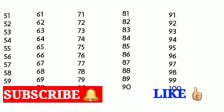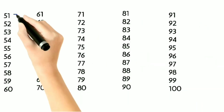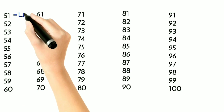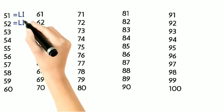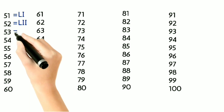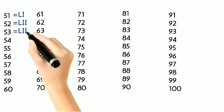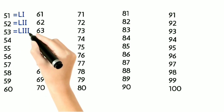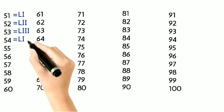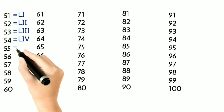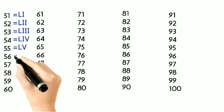In Roman counting, we write 51 as LI, 52 as LII, 53 as LIII, 54 as LIV, 55 as LV.